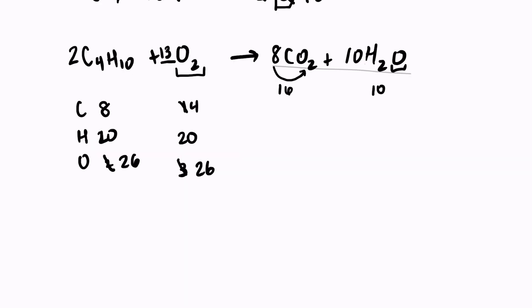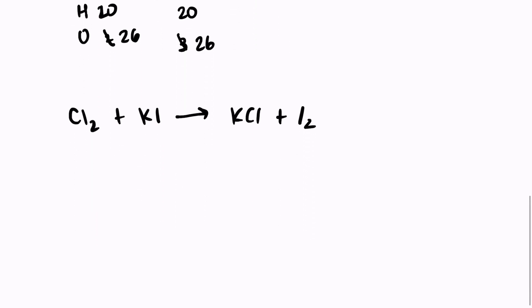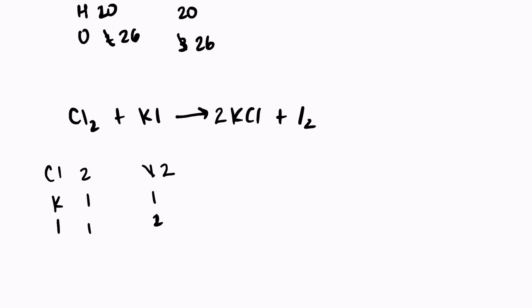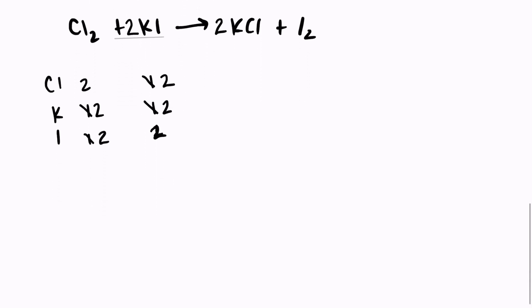Let's try two easier examples. First: Cl₂ plus KI yields KCl plus I₂. We start by counting: two chlorines and one chlorine, one potassium and one potassium, one iodine and two iodines. I'll put a 2 in front of KCl so that chlorine becomes 2 on the right-hand side. Of course, when I put a 2 there I also have two potassiums, so I'll put a coefficient of 2 in front of KI on the left, which fixes both remaining values. Everything is equal.